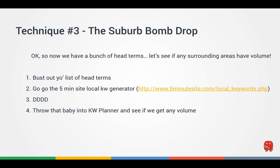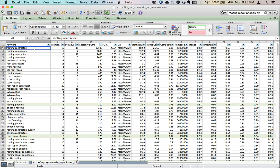The third and final technique is called the suburb bomb drop. From the first two techniques we already have a bunch of head terms. Now we want to see if any surrounding areas have search volume for those terms. We'll do this in an automated fashion — first getting a list of head terms without geo modifiers, like 'roofing' or 'roofing contractor,' then using a website called fiveminutesite.com to combine those with all surrounding suburbs. Then we throw that into Google Keyword Planner to check volume.